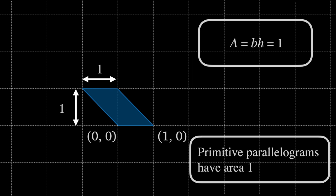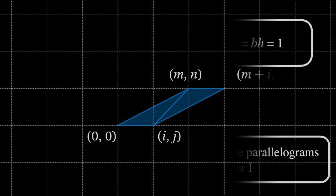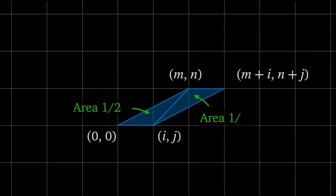And going back to where we started, since our parallelogram was just two primitive triangles stuck together, we can conclude that all primitive triangles have an area of one half.